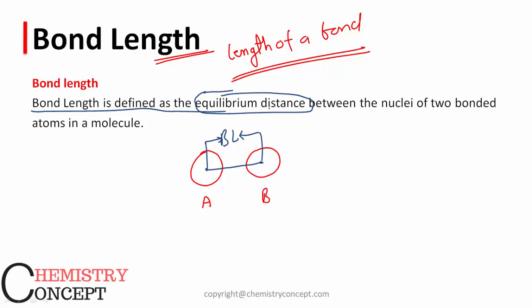What is the meaning of equilibrium distance? If there are two bonded atoms, they are not touching one another, because whenever they come very close, the electronic cloud of both atoms starts repelling, and whenever they go too far, the bond breaks. So there must be a minimum distance at which the two atoms are present — that minimum distance at which the bond exists and repulsion is minimum is called equilibrium distance.